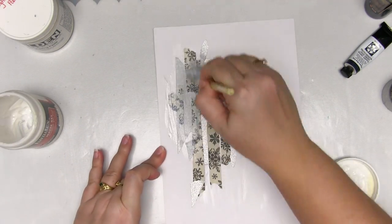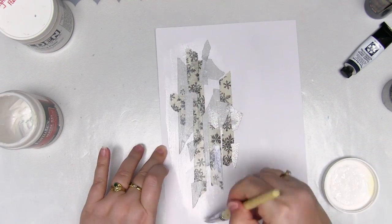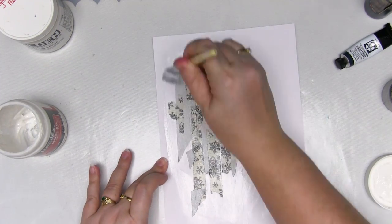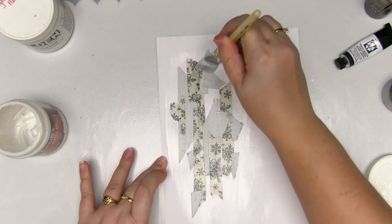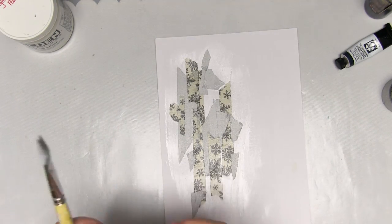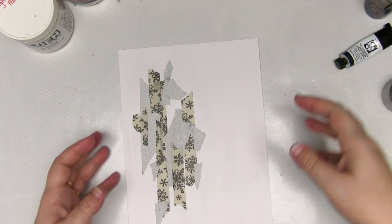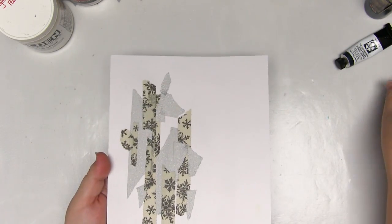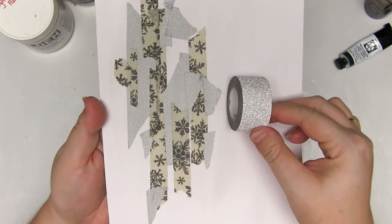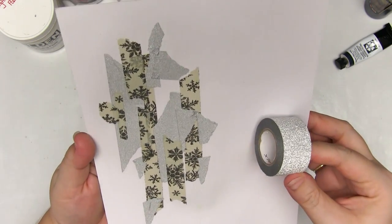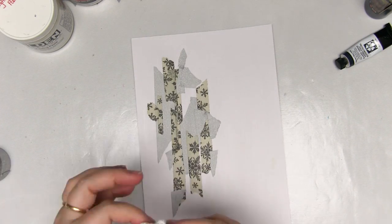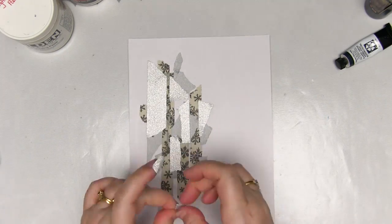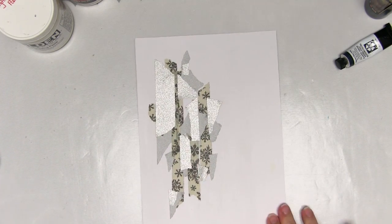I'm also going to add some of the matte gel over the top of this layer of washi, just to make sure it all sticks down properly. Because it's matte gel going over a shimmery washi, I do run the risk of changing how it looks, so we'll just have to see what happens as this dries. Alright, so it turns out that as it dries, it does get some of its sparkle back, but popping matte gel over the top does reduce the shimmer from the deco tape.